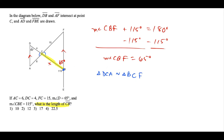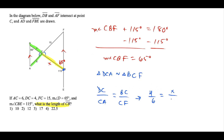Setting up the proportion using the similar triangles: DC over CA equals BC over CF, which gives us 4 over 6 equals X over 15. Cross-multiplying: 6X equals 4 times 15, so 6X equals 60. Dividing both sides by 6, X equals 10. That is the length of the missing side CB.